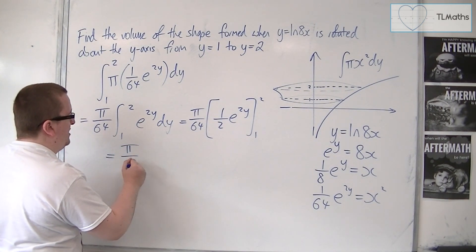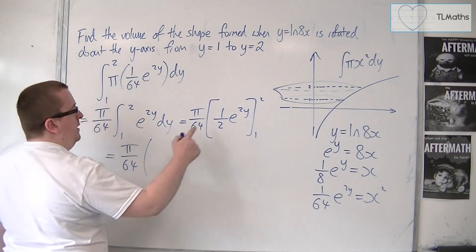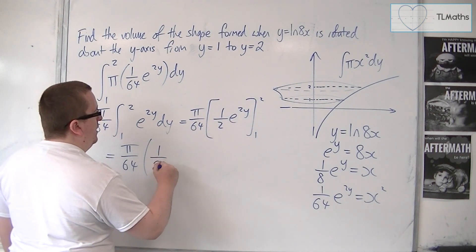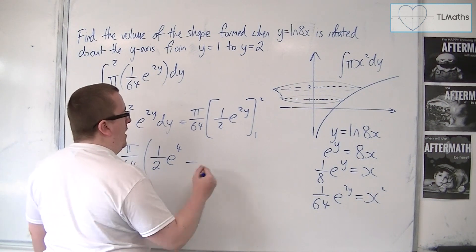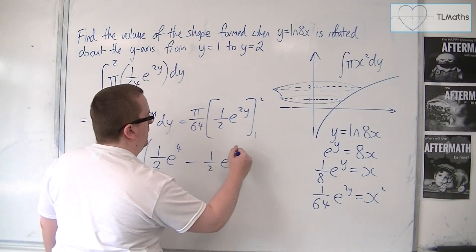So we've got π over 64. Let's leave that outside of a bracket. Substitute in 2, we're going to have half e to the 4. And then substitute in 1, we're going to have half e to the 2.